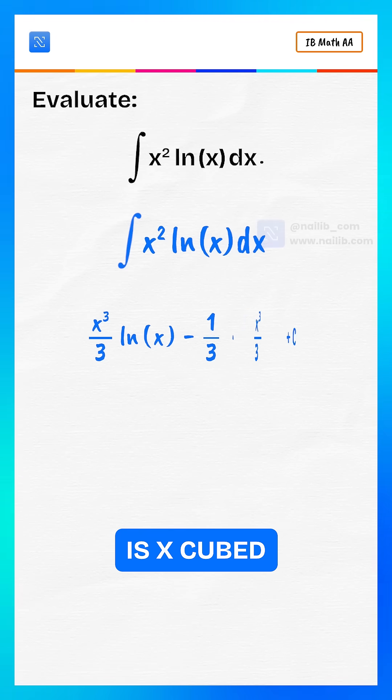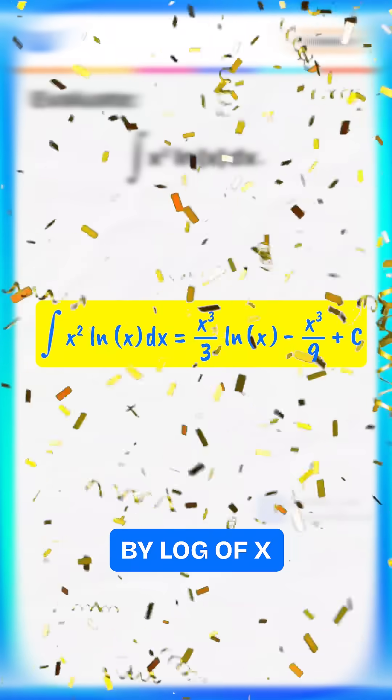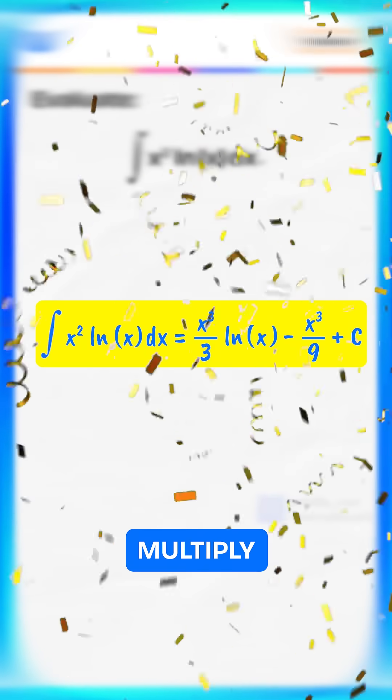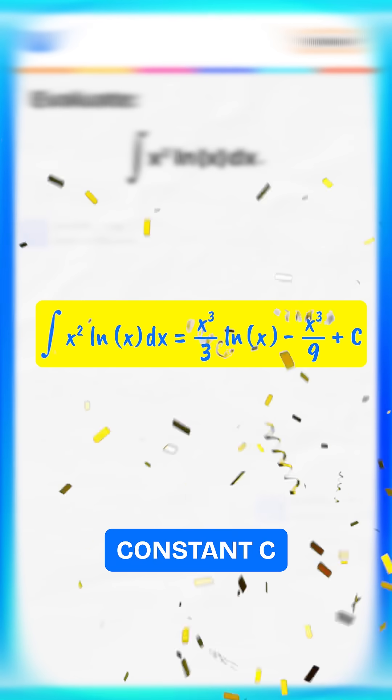Integral of x squared is x cubed divided by 3. So the integral of x squared multiply by log of x equals x cubed divided by 3 multiply by log of x minus x cubed divided by 9 plus constant c.